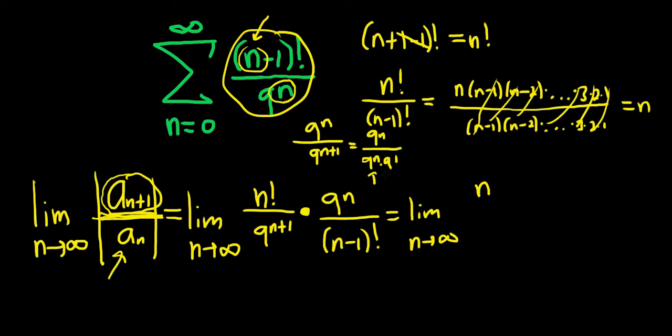We could think of that as 9^n over 9^n times 9^1. Because when you multiply these, you add the exponents. 9^n times 9^1 is 9^{n+1} because the bases are the same. This simplifies to 1/9. So we have n/9, which cleans up really nice.